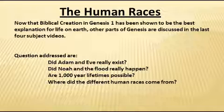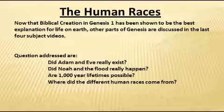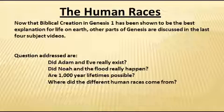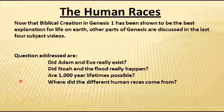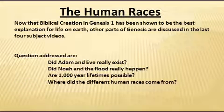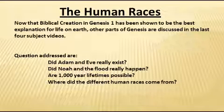This is the final video in this series dealing with questions in Genesis other than the biblical creation in Genesis chapter 1. We're at the final stage where we'll look at where the different human races come from and there is a scientific explanation about that. The video after this will be the final conclusion video, which will in more detail present the conclusions you've seen throughout these various videos.